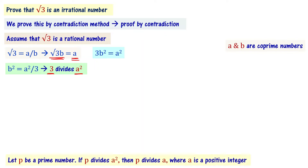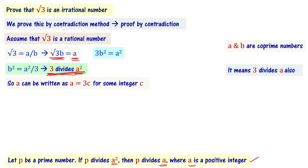From the real numbers chapter: if p is a prime number and p divides a squared, then p also divides a, where a is a positive integer. Since 3 is a prime number and 3 divides a squared, by this statement 3 divides a also.